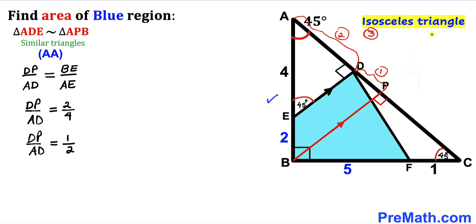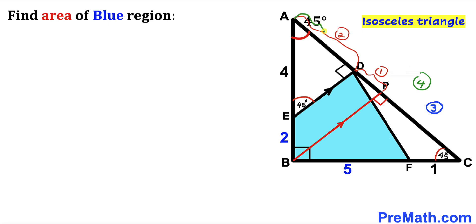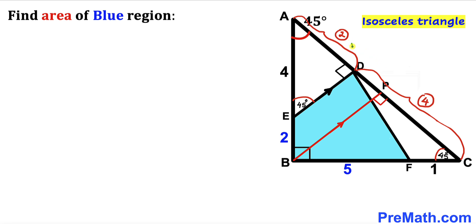Triangle ABC is isosceles and BP is the perpendicular bisector, so AP equals PC. Since AP is 3, PC is also 3. Therefore DC equals 1 plus 3, which makes 4. We know AD is 2, so the ratio of AD to CD is 2 to 4.